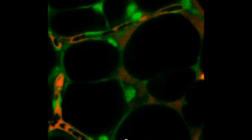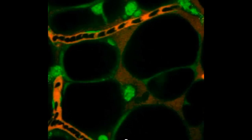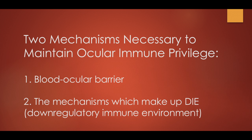Ocular immune privilege is also not absolute. There are two mechanisms within our eyes that are necessary to maintain it: the first being the blood-ocular barrier, and the second being the mechanisms that make up the D.I.E., which stands for Down Regulatory Immune Environment.